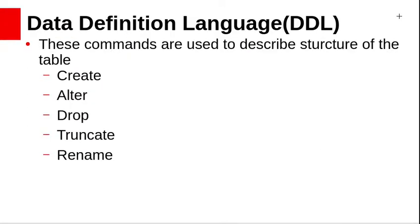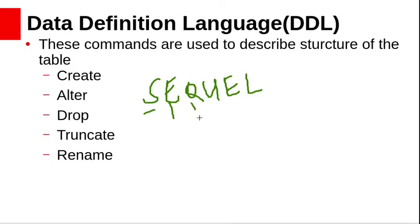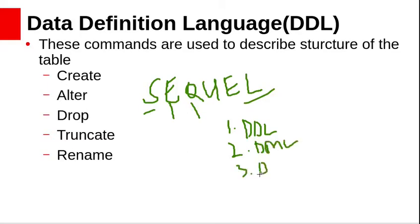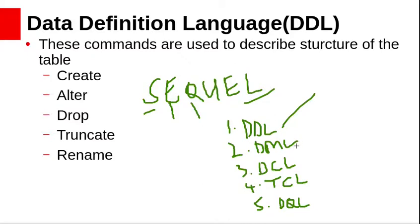Relational databases use Structured Query Language, SQL, also known as Structured English Query Language, developed by IBM Corporation. It is a non-procedural language and supports five sub-languages: Data Definition Language (DDL), Data Manipulation Language (DML), Data Control Language (DCL), Transaction Control Language (TCL), and Data Query Language (DQL). Now we will focus on DDL and DML.